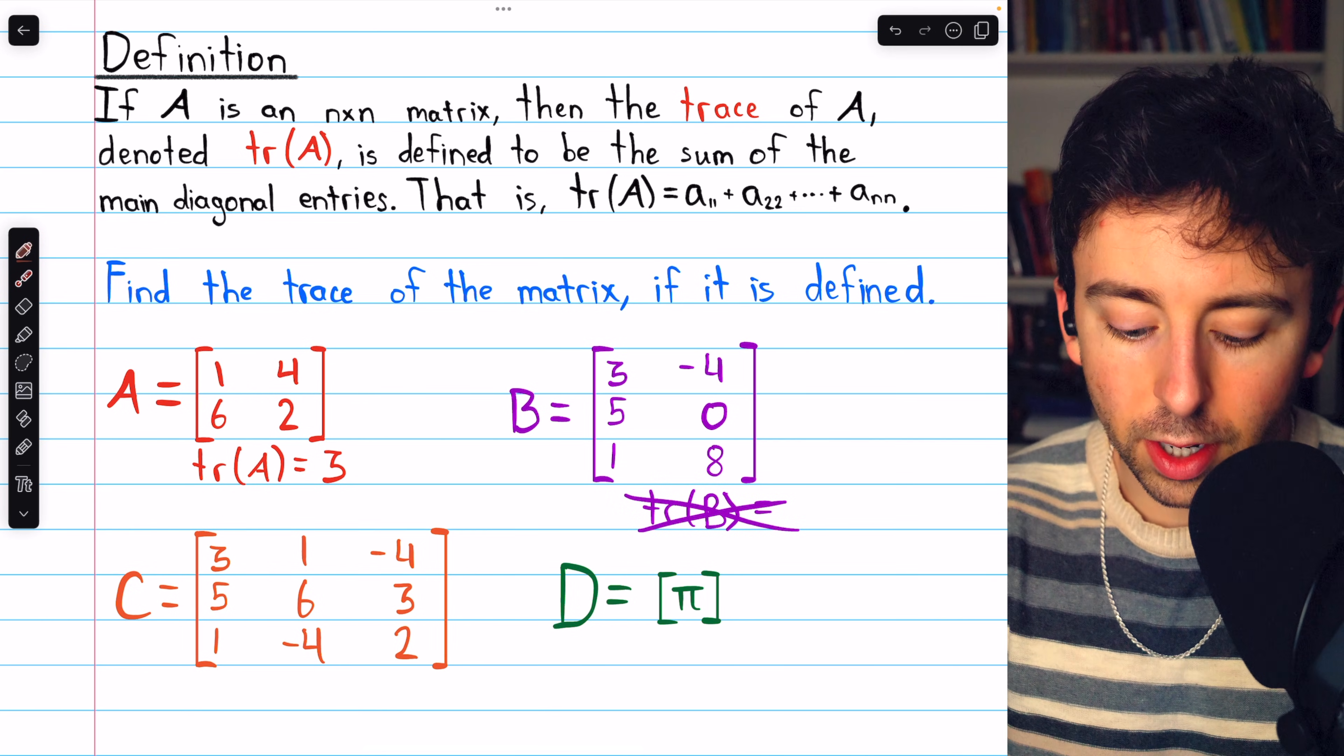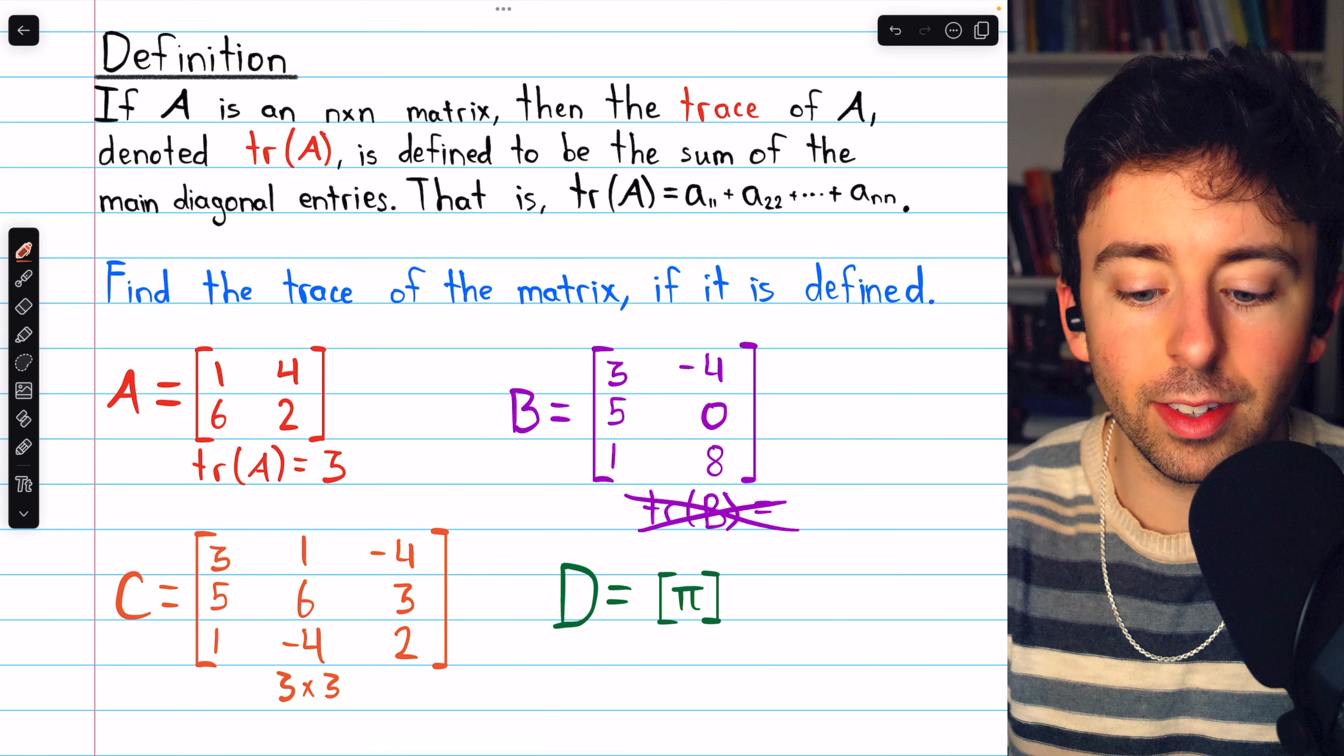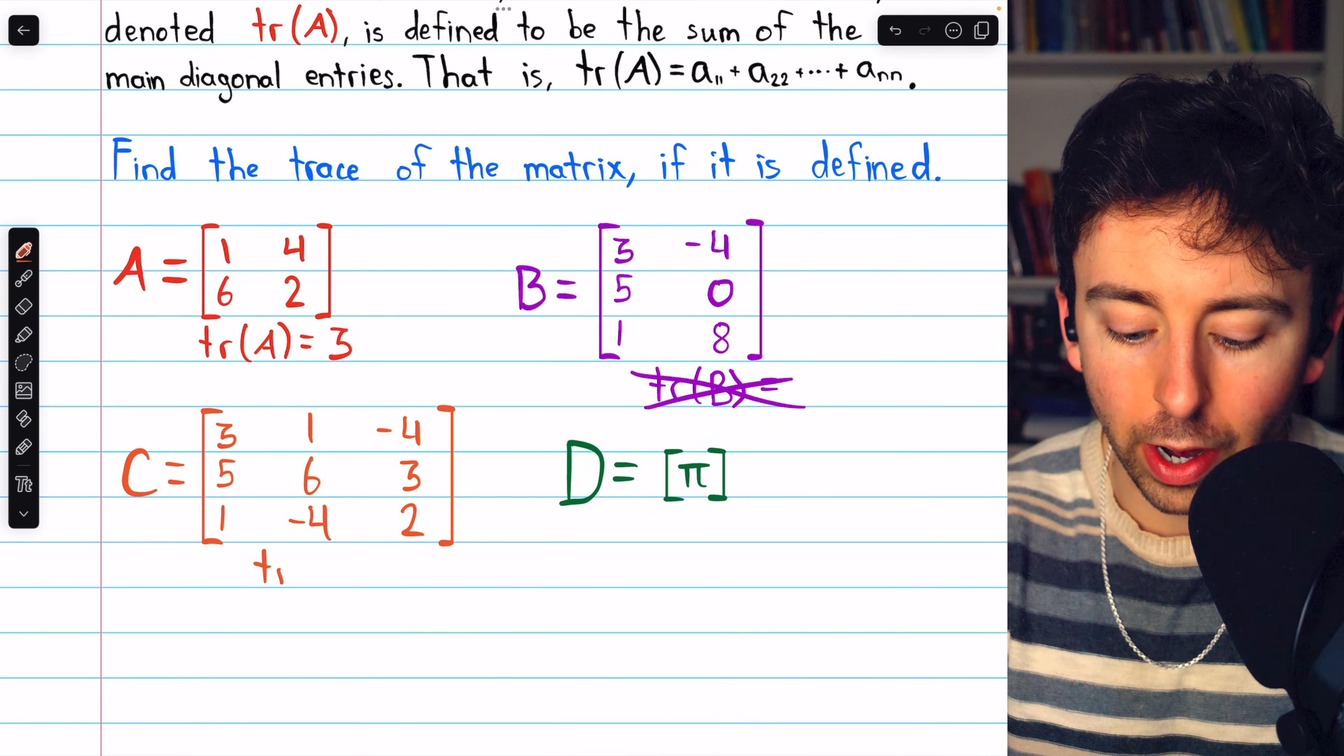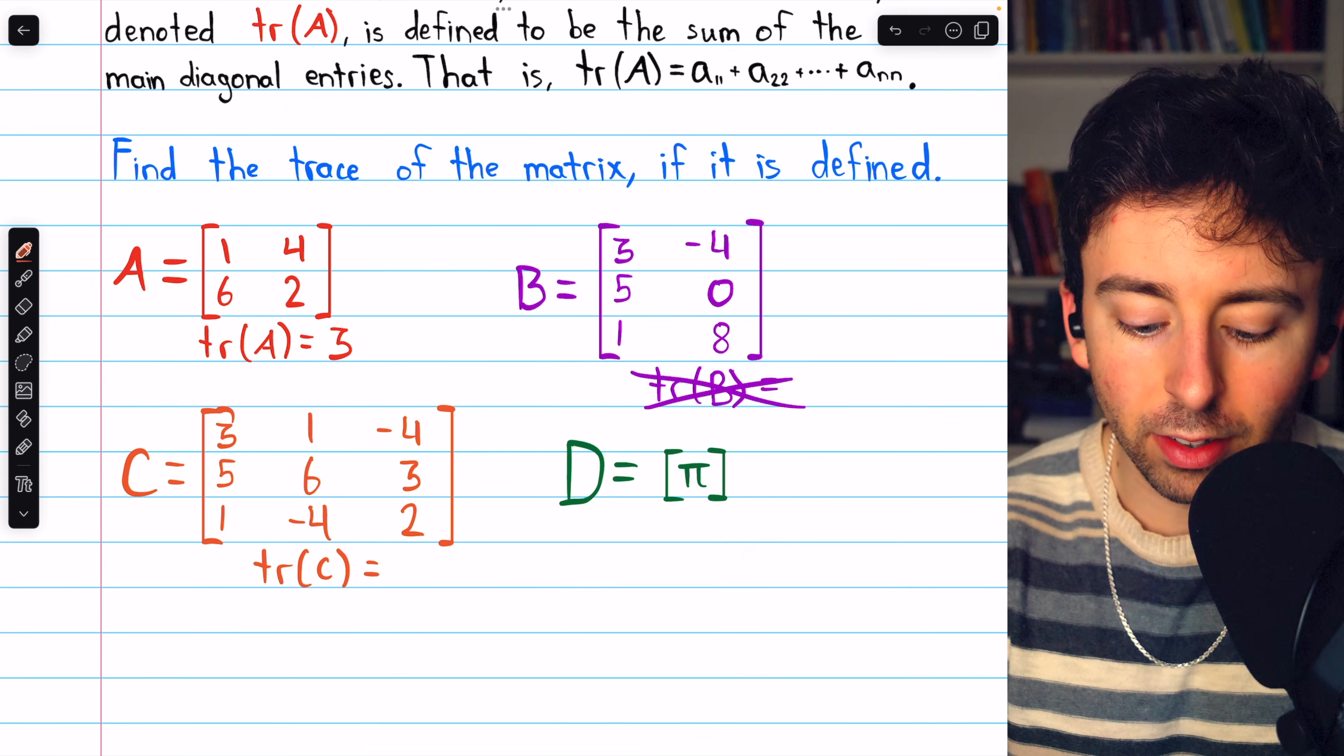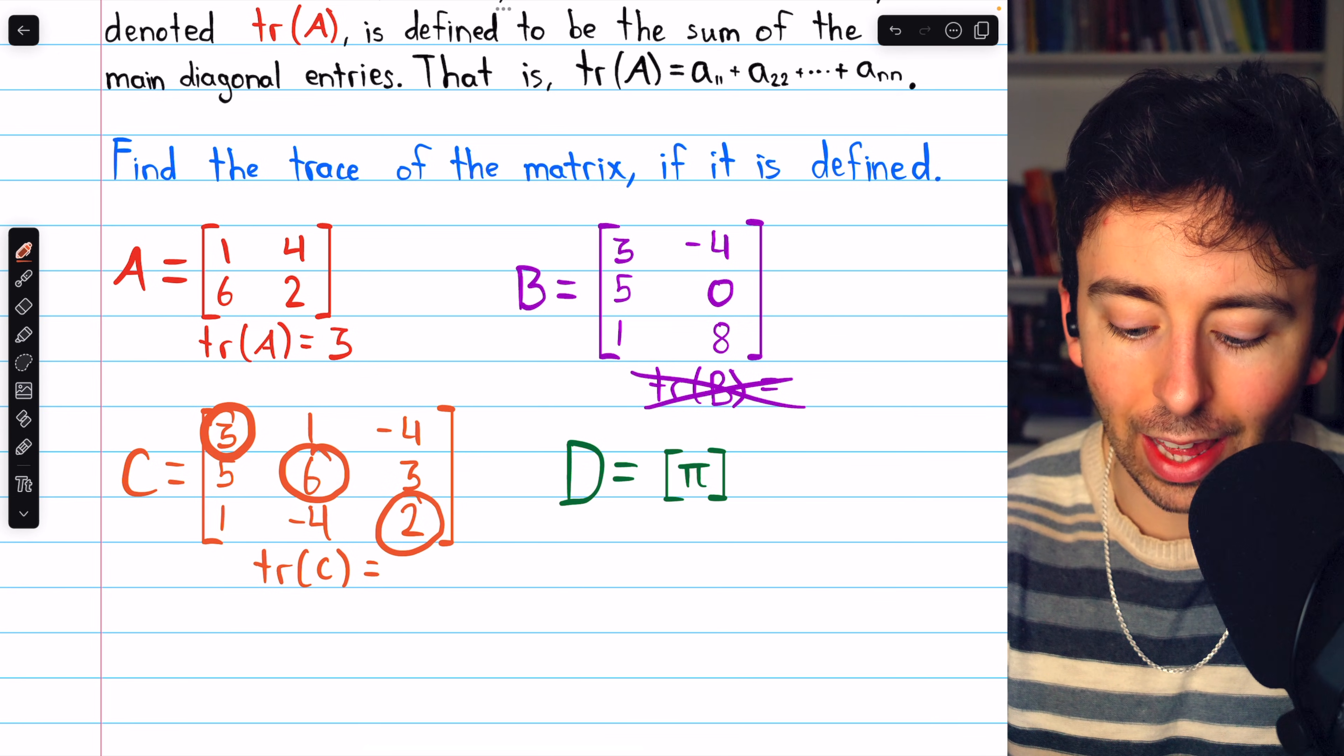What about matrix C? The dimensions of matrix C are 3 by 3, so this is a square matrix, and hence its trace is defined. The trace of matrix C is the sum of its diagonal entries, so 3 plus 6 plus 2, and that's 11.